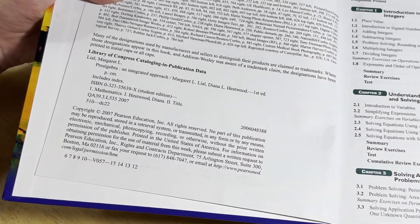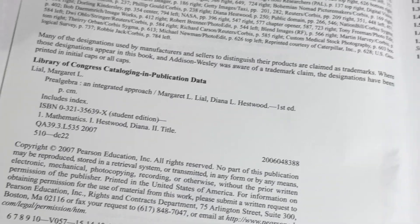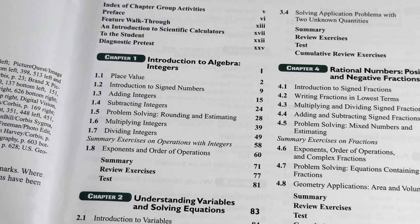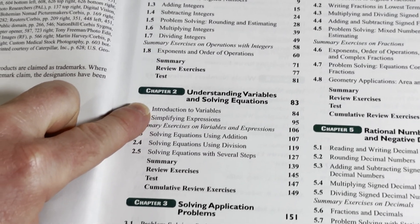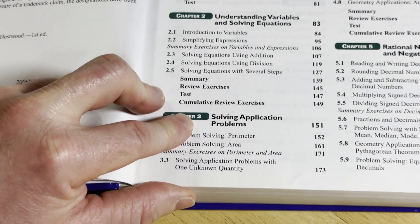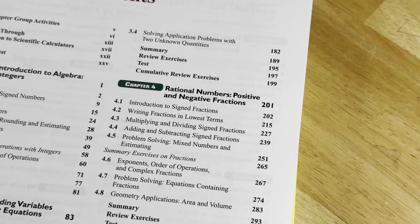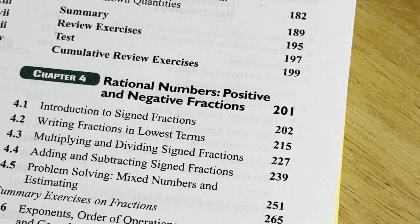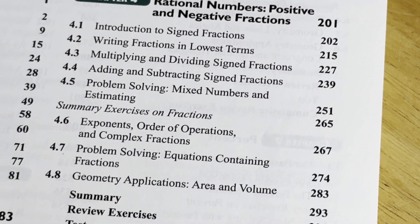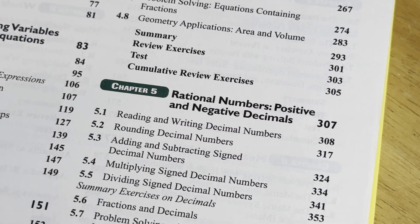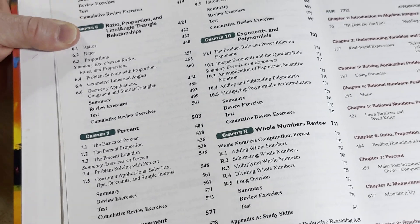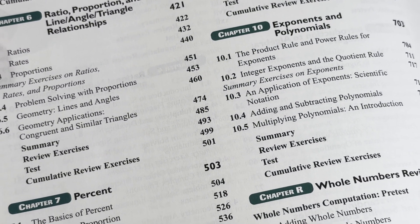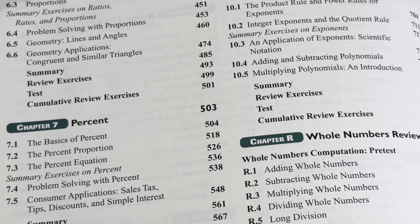This one is from 2007 — there's the copyright. Let's take a look at some of the contents. It starts with integers, really basic stuff: adding integers, subtracting integers, then variables and solving equations, solving application problems. Then we have rational numbers — positive and negative fractions — and rational numbers with positive and negative decimals. You can see all the basic stuff you would typically see in a pre-algebra course.